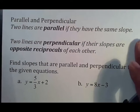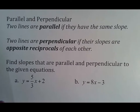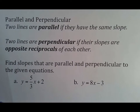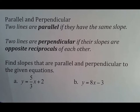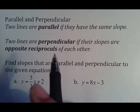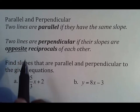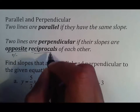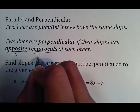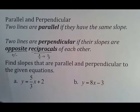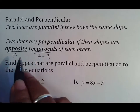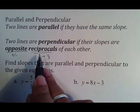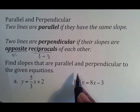Parallel and perpendicular: two lines are parallel if they have the same slope — write that down. The trickier one is perpendicular: two lines are perpendicular if their slopes are opposite reciprocals. That's a compound definition — 'opposite' means changing the sign (positive/negative), and 'reciprocal' means flipping the fraction, so 3/4 becomes 4/3. Both things must happen.